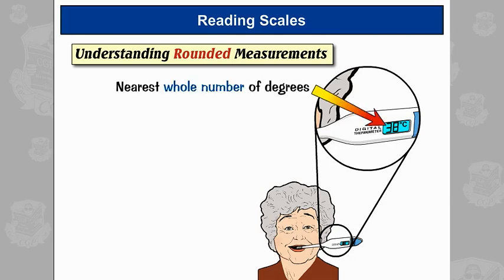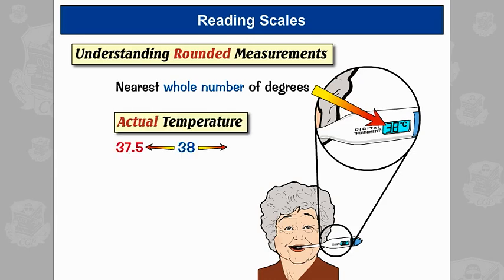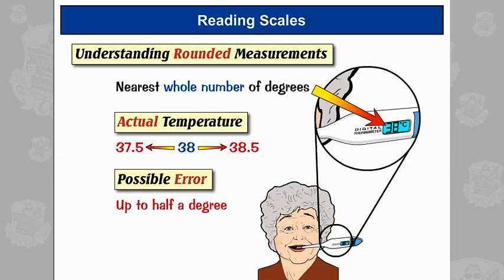But because it's been rounded, we don't know what the actual temperature is. It could be anywhere between 37.5 and 38.5 degrees. Anything in that range would round to 38. So there's a possible error of up to half a degree.